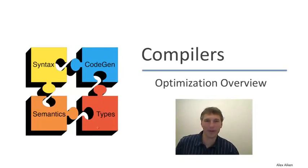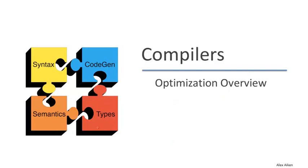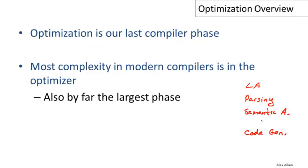We're now ready to begin our next major topic: program optimization. In this video, we're just going to give an overview discussing why we want to perform optimization and what the trade-offs are for compilers in deciding what kinds of optimizations to implement. Optimization is the last compiler phase we're going to discuss. Let's briefly review the compiler phases: first there's lexical analysis, then parsing, then semantic analysis, followed by code generation, and now we're going to talk about optimization.